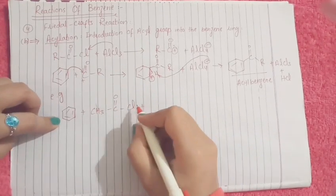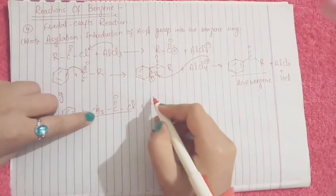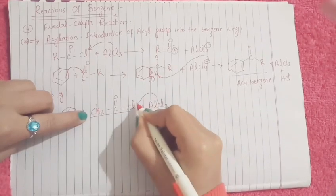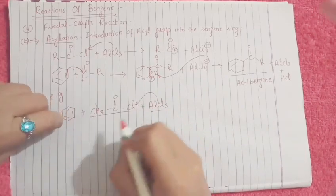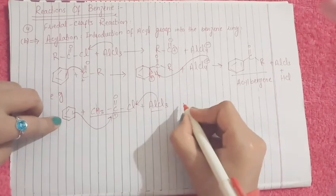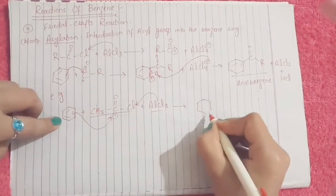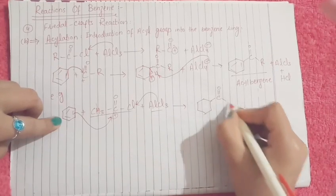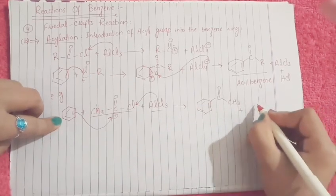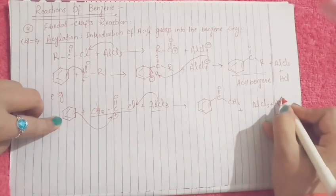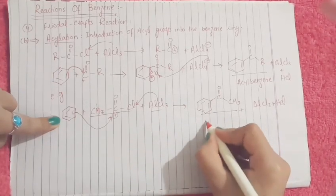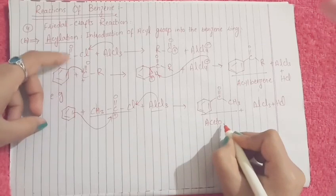With this reagent as a source of acyl, plus Lewis acid aluminum chloride. Aluminum will take up this chlorine and we will get a positive charge here. Benzene will react here and we will get our desired product along with AlCl3 plus HCl. This product we got is known as acetophenone.